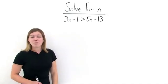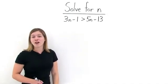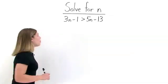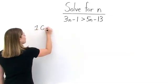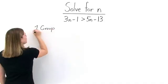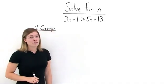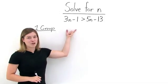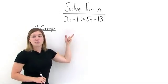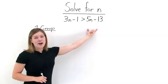If you get a problem that contains more than one of the variable you're trying to solve for, the first thing to do is to group all of those terms together on one side of your inequality. So for this problem, let's group all of our N terms on the left-hand side of our inequality and all of our terms that do not contain an N on the right-hand side.